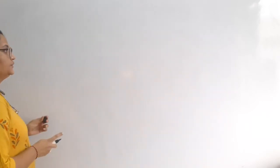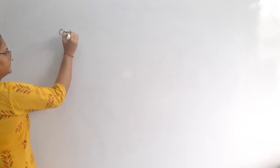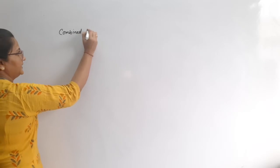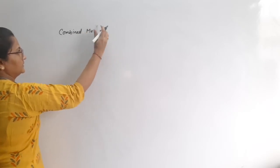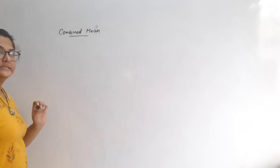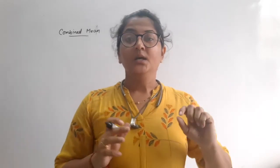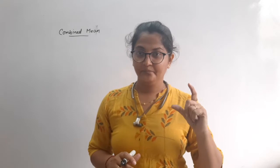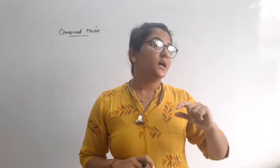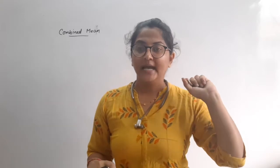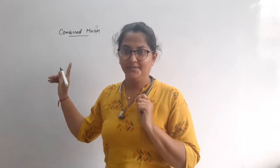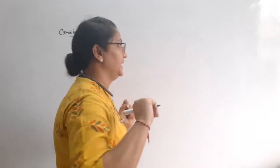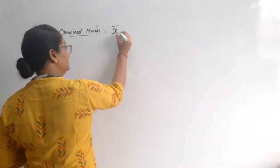First, I am going to tell you the Combined Mean formula. Combined means that if there are one or two groups, they will be combined together. That means whenever we have an x bar mean or x bar group, then and then only we can find combined mean. Clear?